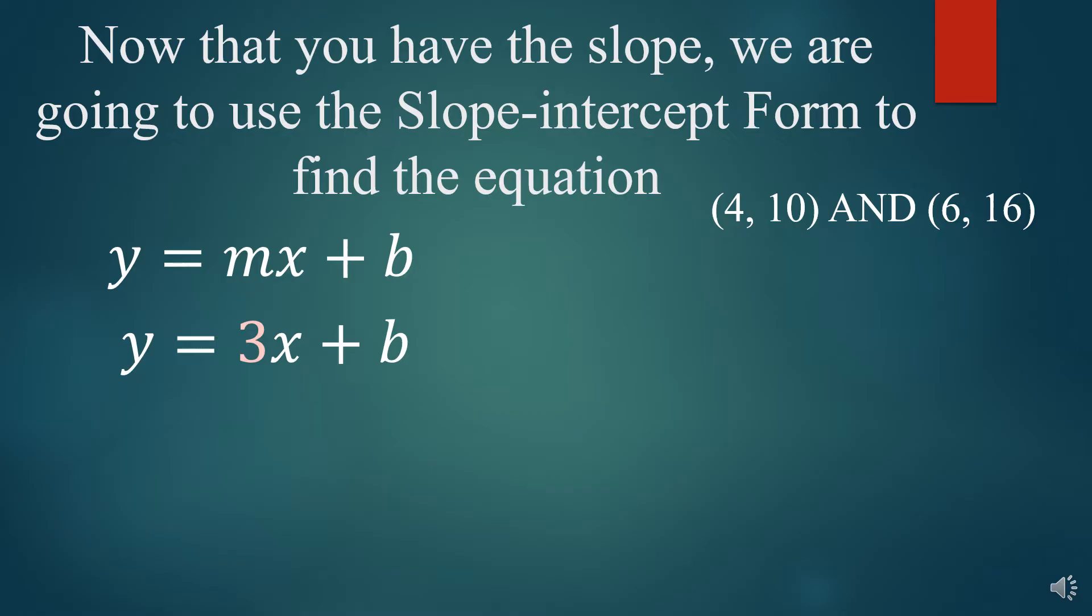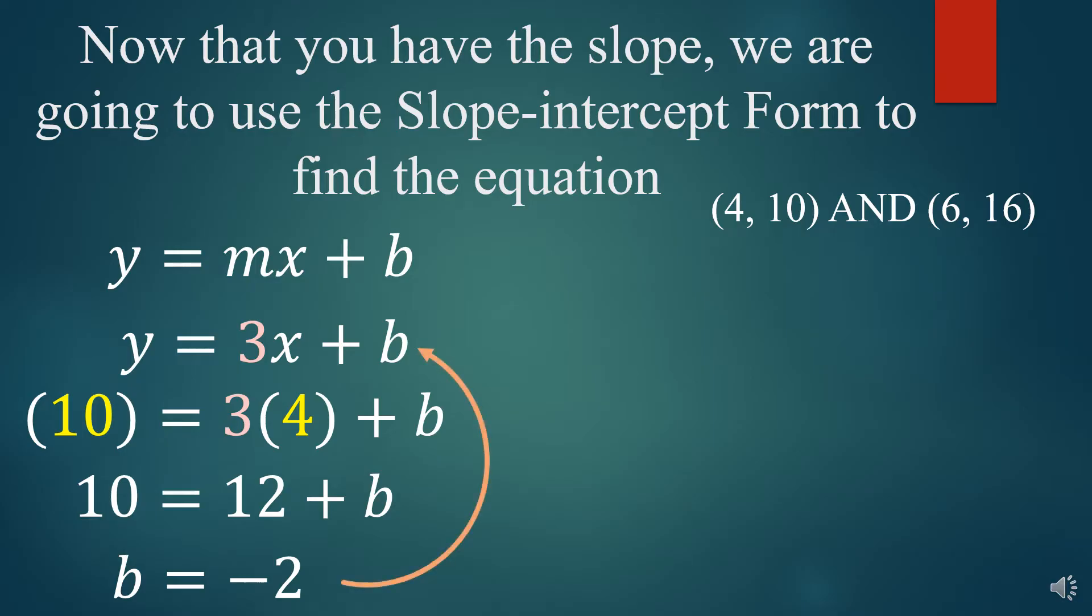We have to find that b, and so here's what you're going to do. You're going to take either one of the points and substitute them in for the x and y, and so look what I did here. I used the first one, 4, 10. I put 4 in for the x, 10 in for the y, and now I'm going to simplify and solve for b. So I got 10 equals 12 plus b, and b equals negative 2. Now, we found our b. So we take that, and we put it back up into that equation that's missing the b, and we have our equation: y equals 3x minus 2. That was easy, right?